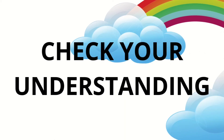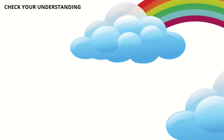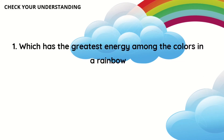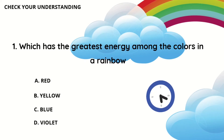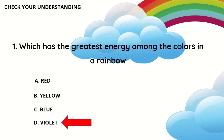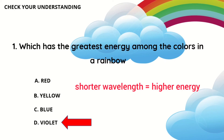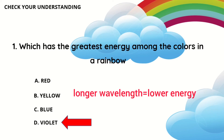Let us try if you have learned something from this video lesson. Question one: which has the greatest energy among the colors in a rainbow? A, red. B, yellow. C, blue. D, violet. The answer is letter D, violet. We learned that the shorter the wavelength, the higher the energy. The longer the wavelength, the lower the energy.